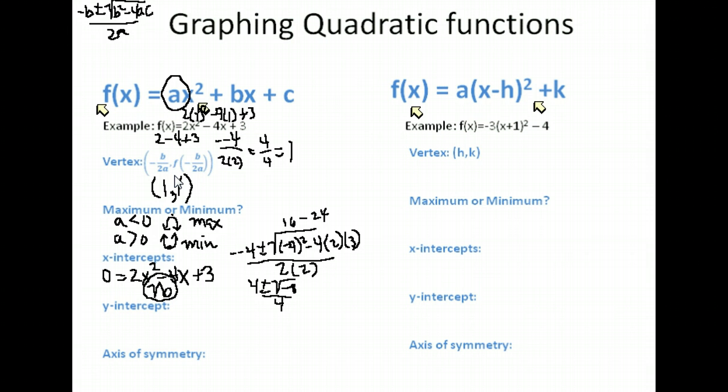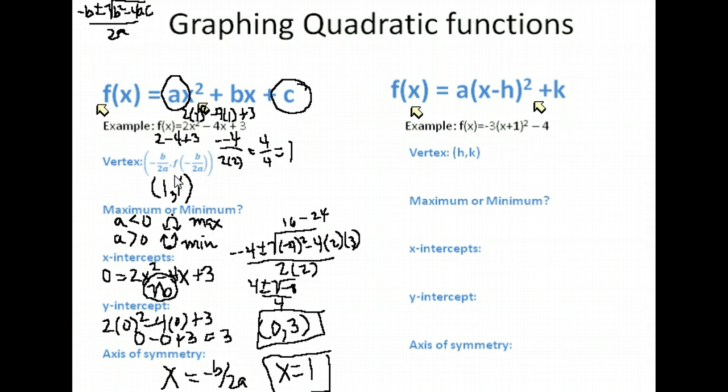Y-intercepts, to find the y-intercepts, it's a bit easier. You put 0 in for all of your x-values. That gives us 0 minus 0 plus 3 or 3. Now, in this form of the equation, your y-intercept is going to be this number added on the end. Only if it's in this form, however. So, our y-intercept is where x is 0 and y is 3. The axis of symmetry is always going to be the line x equals the x-coordinate of your vertex or negative b over 2a. So, in this case, as we found up above, that would be the line x equals 1.